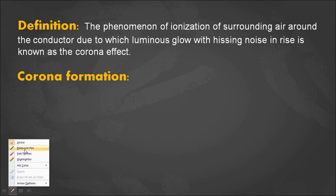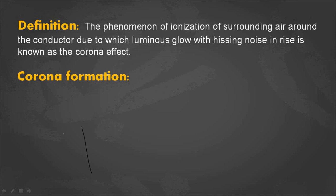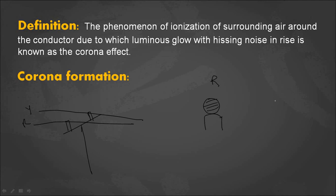Now let's see in detail how corona is formed. A transmission line has a tower, and the conductors are supported by insulators. For ease of explanation I am drawing only two conductors — one is the A-phase conductor and another is the Y conductor. The tower is grounded, so the potential of the tower is zero volts, the potential of the supporting arm is zero volts, and the potential of the insulator is zero volts. The transmission line voltage is generally greater than 220 kV.